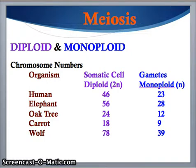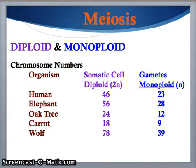For a wolf, there are 78 chromosomes in its somatic cells — that is the diploid number — and the monoploid number for a wolf is 39 chromosomes in its gametes.